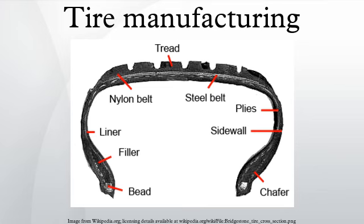The tire is an assembly of numerous components that are built up on a drum and then cured in a press under heat and pressure. Heat facilitates a polymerization reaction that cross-links rubber monomers to create long elastic molecules. These polymers create the elastic quality that permits the tire to be compressed in the contact area and spring back to its original shape under high-frequency cycles.